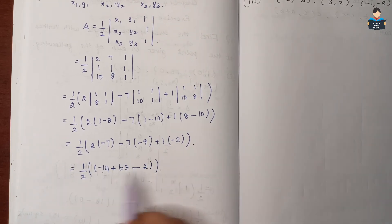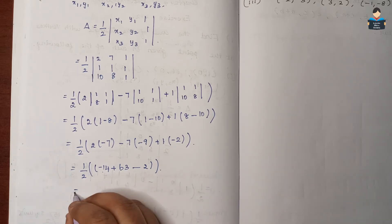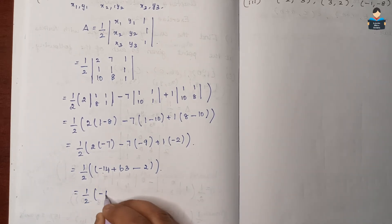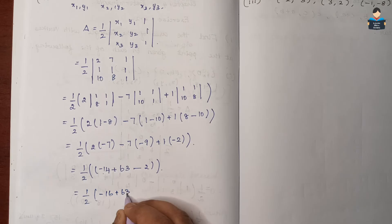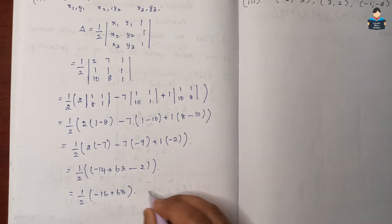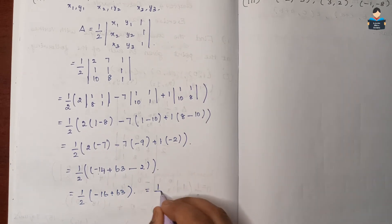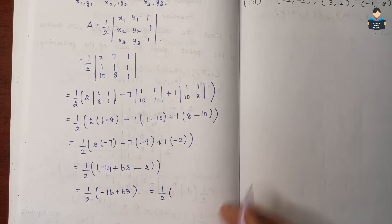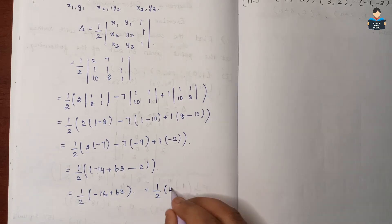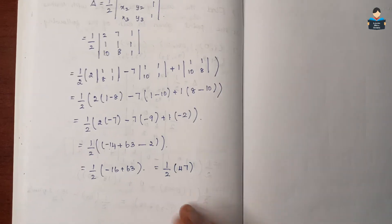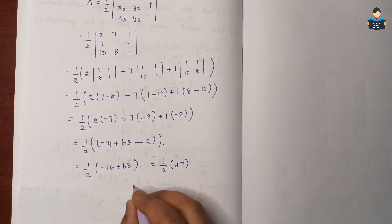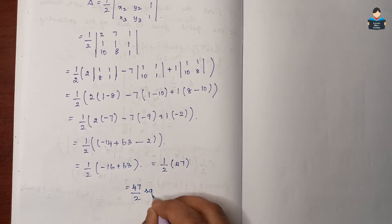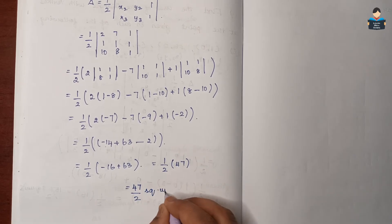So minus 14 minus 2 gives minus 16, plus 63. So 1 by 2 times 47, by subtraction we get 47. Final answer is 47 by 2 square units.